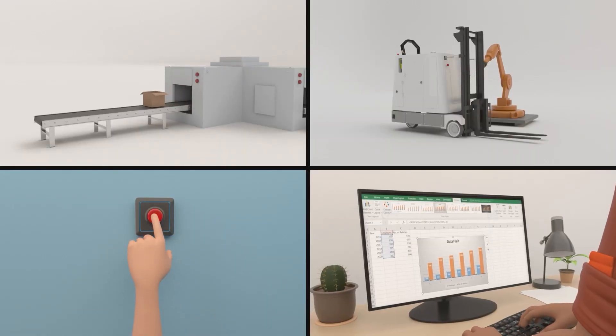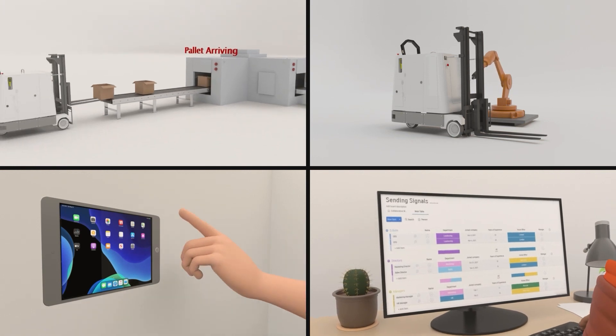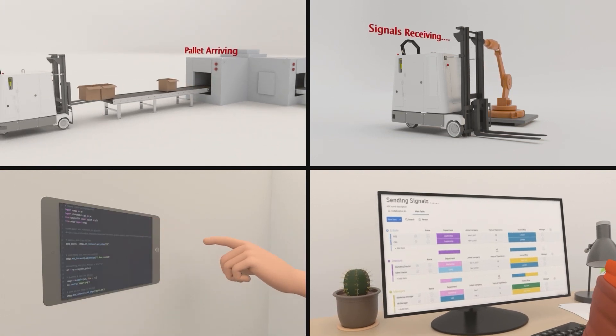Robots can be called to a task by a push of a button, via sensors, touch screen, smart controller, or through an inventory system already in place.